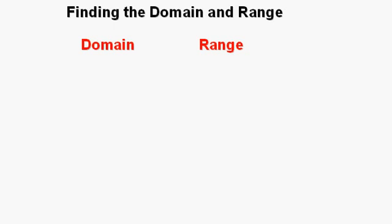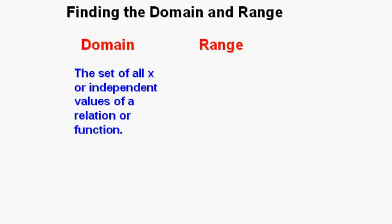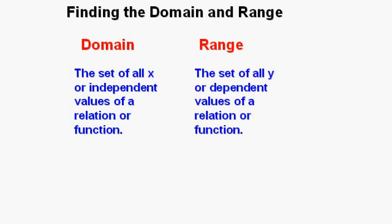In algebra we have sets in pairs of words that work together to explain things. Domain and range is such a pair. The domain is the set of all x, or independent values, of a function or relation. And the range of a function or relation would be the set of all y, or dependent values.